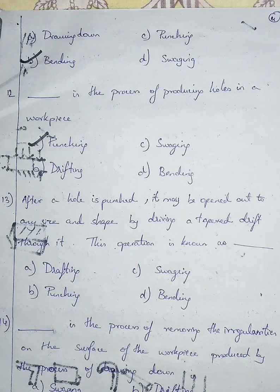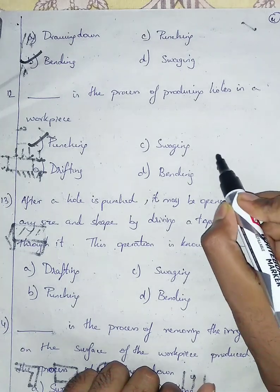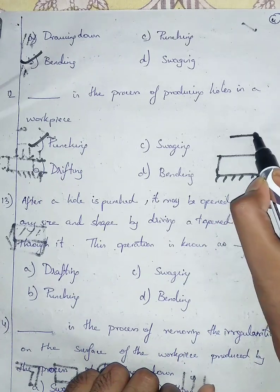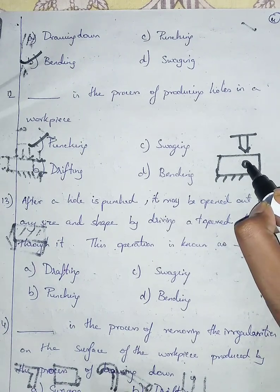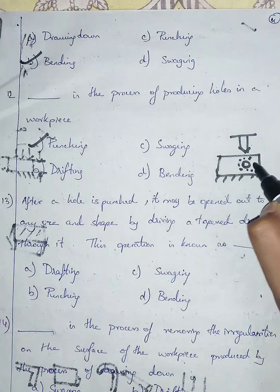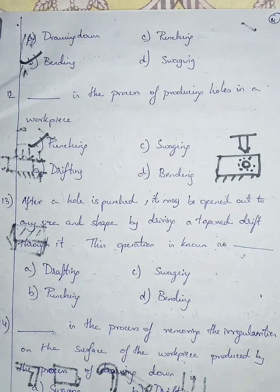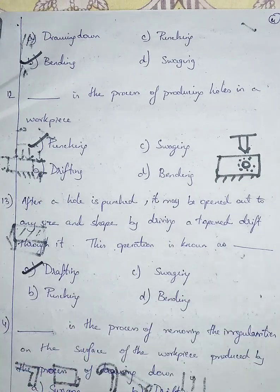Question number thirteen: after a hole is punched, it may be opened out to any size or shape by driving a taper drift through it. The operation is known as — option A: drafting, option B: punching, option C: swigging, option D: bending. For example, a 2 mm hole enlarged to 8 mm — this operation is called drafting. The right answer is A, drafting.